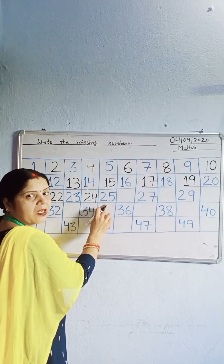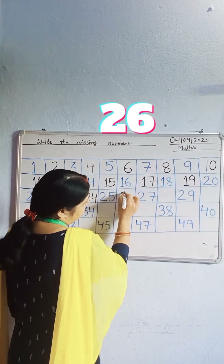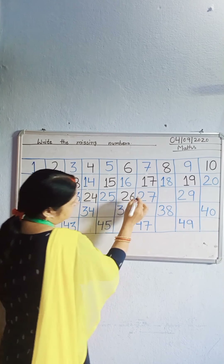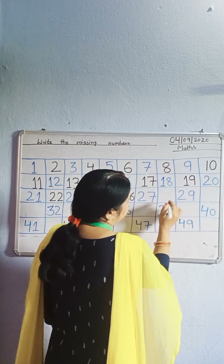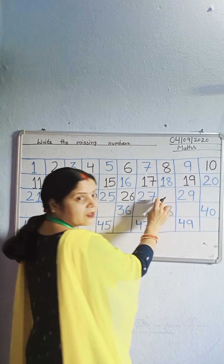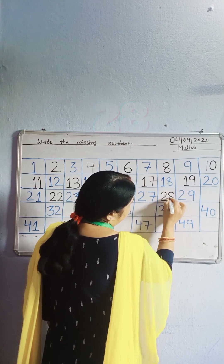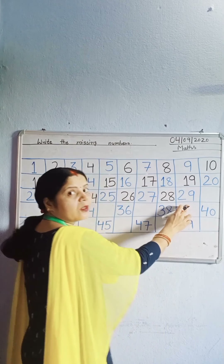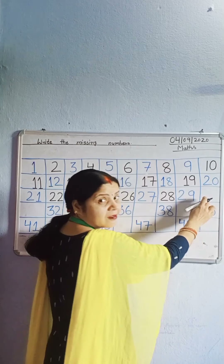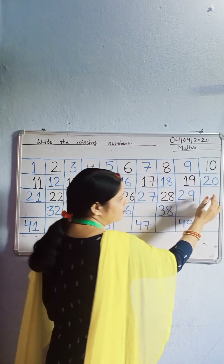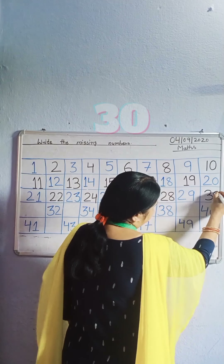24. Next, which number? 25. Which number is missing? 26. Next, which number? 27. Which number is missing? 28. Write down 28. Which number? 29. Which number is missing? 30. Write down 30.